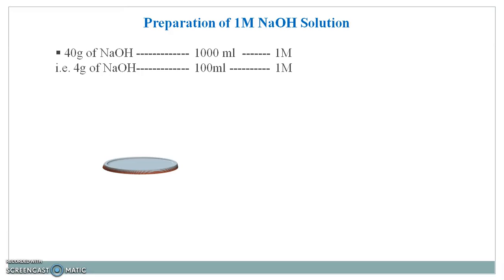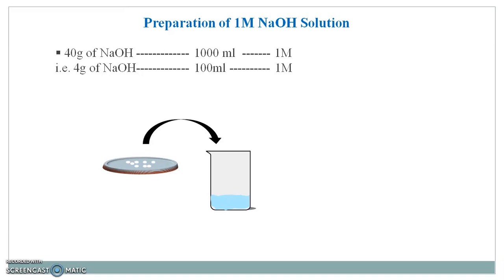You have to weigh sodium hydroxide and transfer it into a beaker containing a small amount of water. You must use carbon dioxide free water. The reason for using carbon dioxide free water is that carbon dioxide gas dissolves in water and forms a small amount of carbonic acid. This carbonic acid alters the pH of water, making it slightly acidic, and would also utilize some sodium hydroxide. So to avoid this, we use carbon dioxide free water.